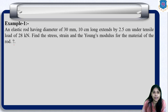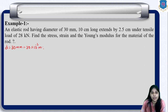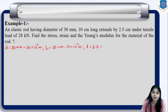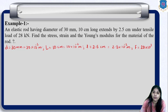So let us start with the given data. Diameter D is equal to 30 mm. We are solving the numericals in the MKS system, so don't forget to convert the units. Length L is 10 cm, so it will be 10×10⁻² meter. The extension is 2.5×10⁻² meter. And the load, that is force, is 28 kN, so it will be 28×10³ newton.